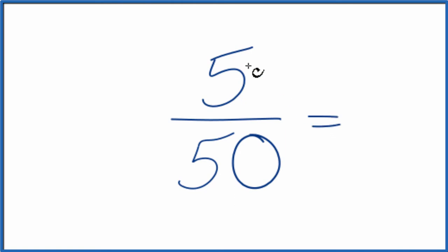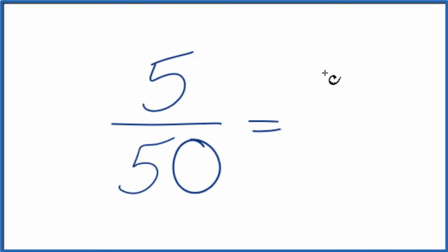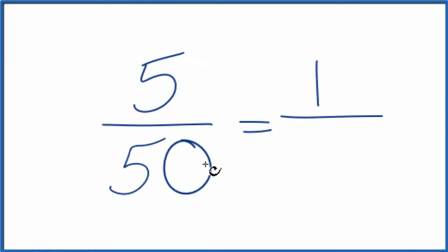So let's divide the top, the numerator, by 5. 5 divided by 5 is 1, and then the denominator will divide that by 5. 50 divided by 5, that's 10, because 10 times 5 is 50.